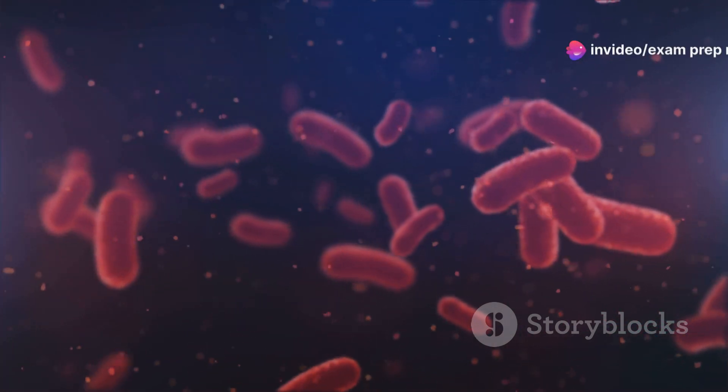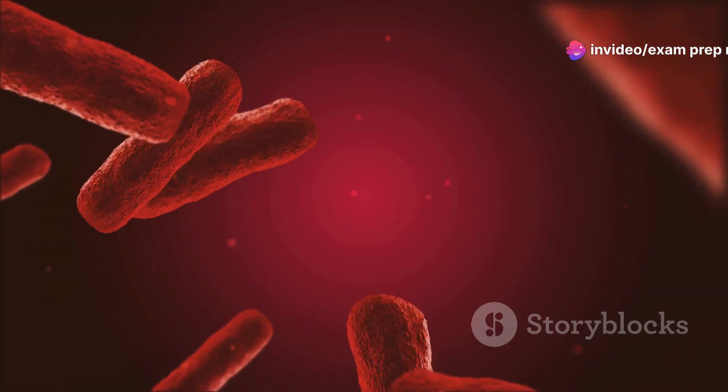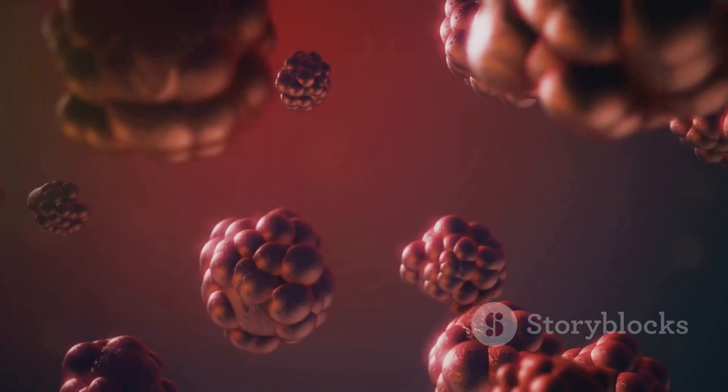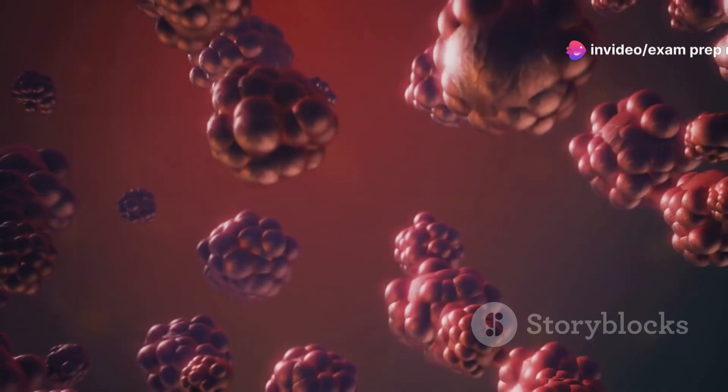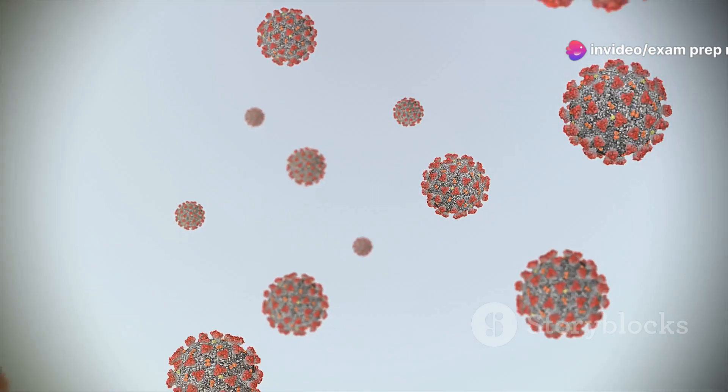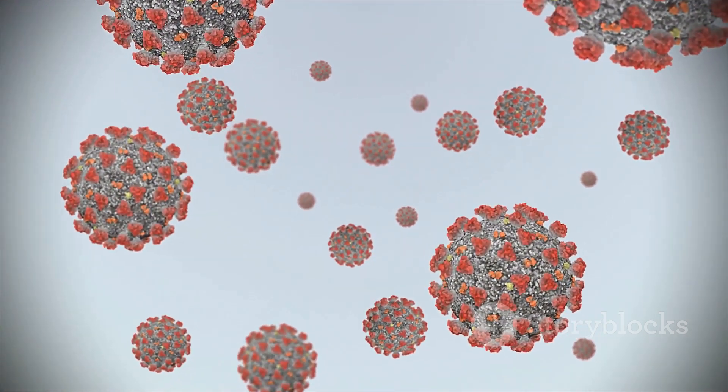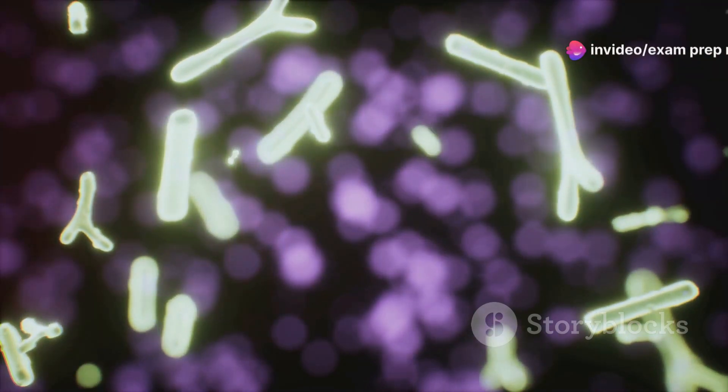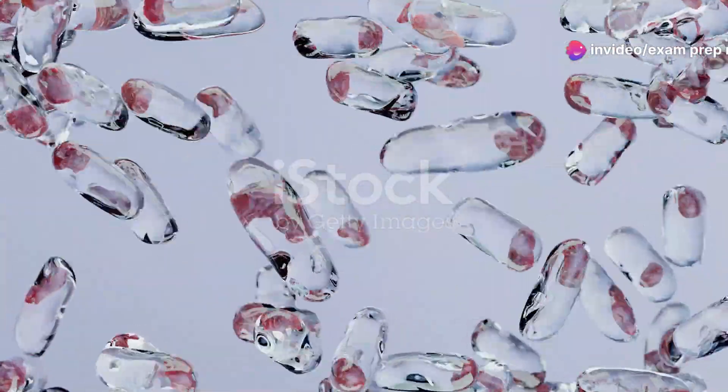Eubacteria, on the other hand, are the bacteria we encounter every day. They inhabit soil, water, and even our own bodies. Eubacteria are incredibly diverse and play essential roles in nutrient cycling, decomposition, and even our own health. One key difference between these domains lies in their cell walls. Archaebacteria lack peptidoglycan, a molecule found in the cell walls of most Eubacteria. Another key difference lies in their genetic makeup. The discovery of Archaebacteria revolutionized our understanding of life on Earth.